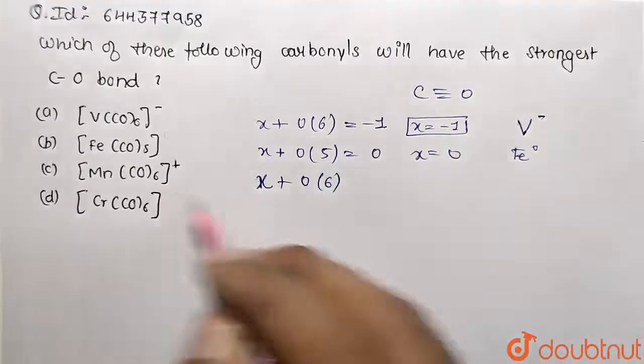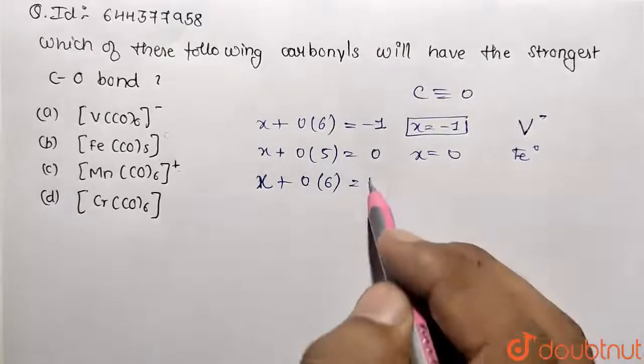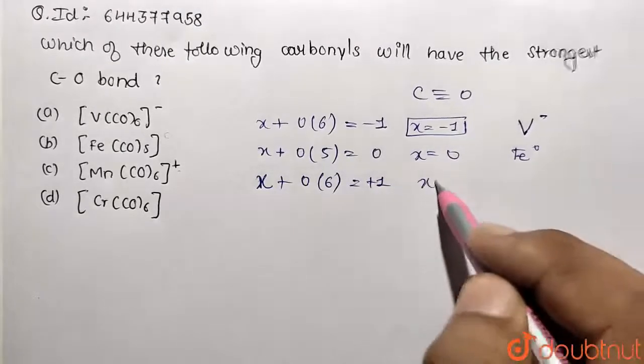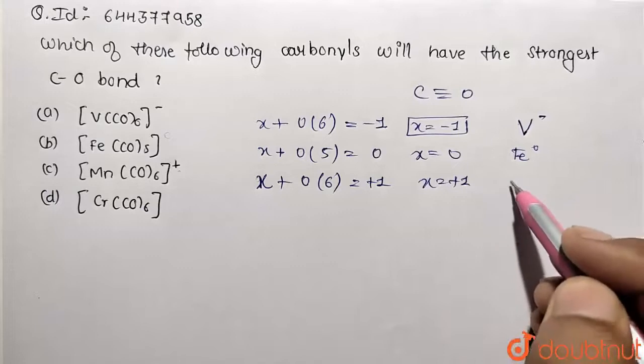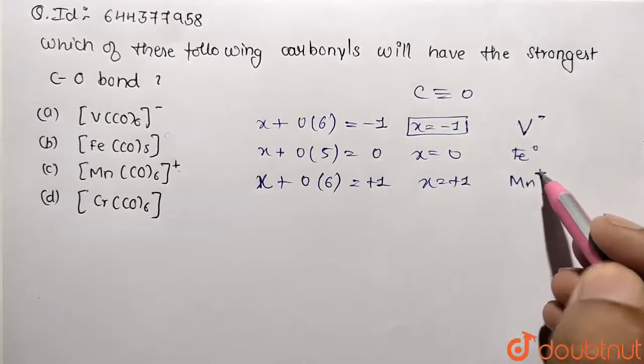Similarly you can work for the manganese as well. This is also neutral ligand so 0 multiplied by 6 and overall charge is positive 1. So value turns out to be positive 1.